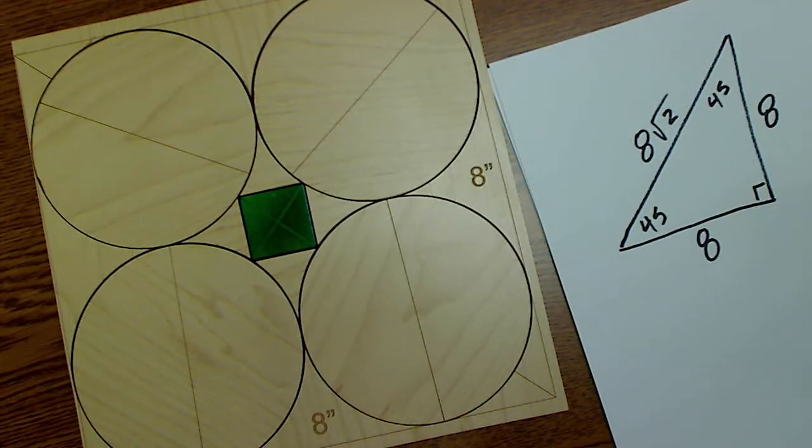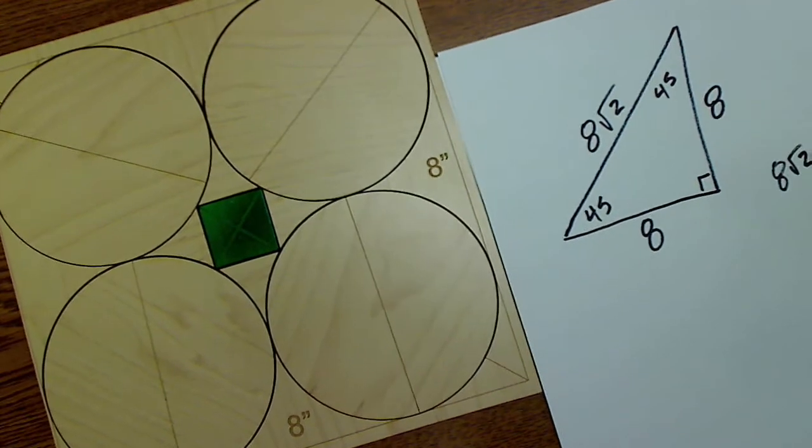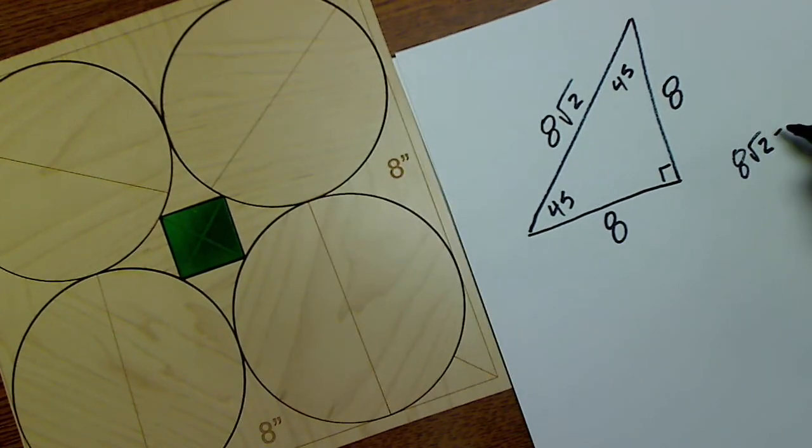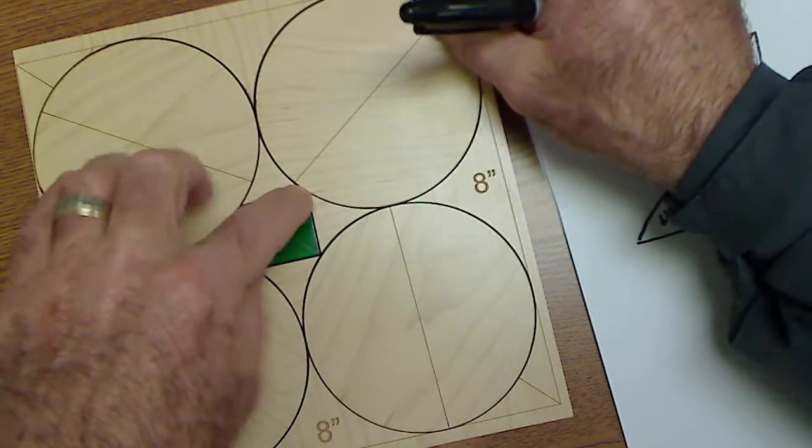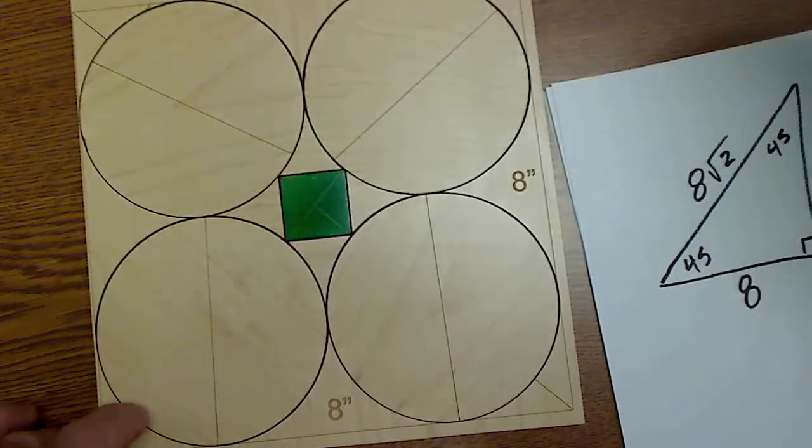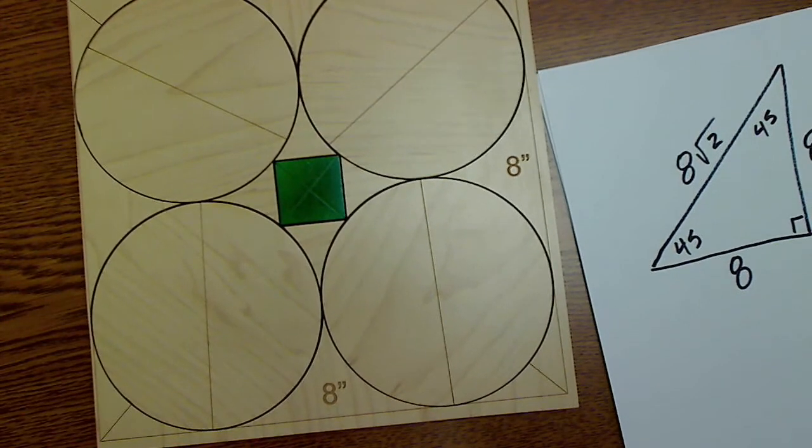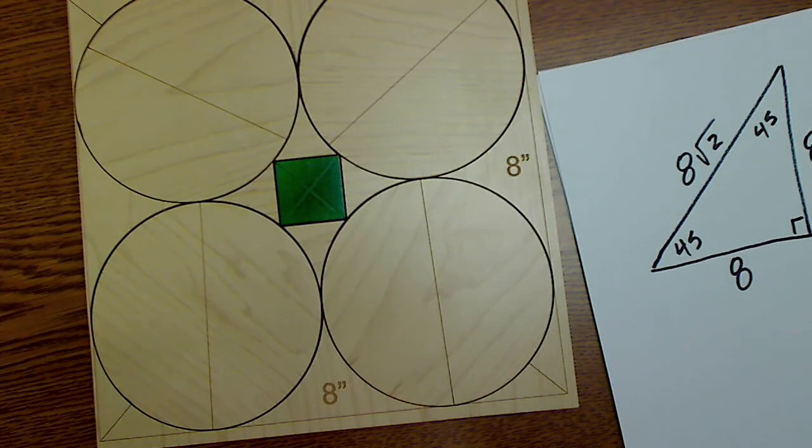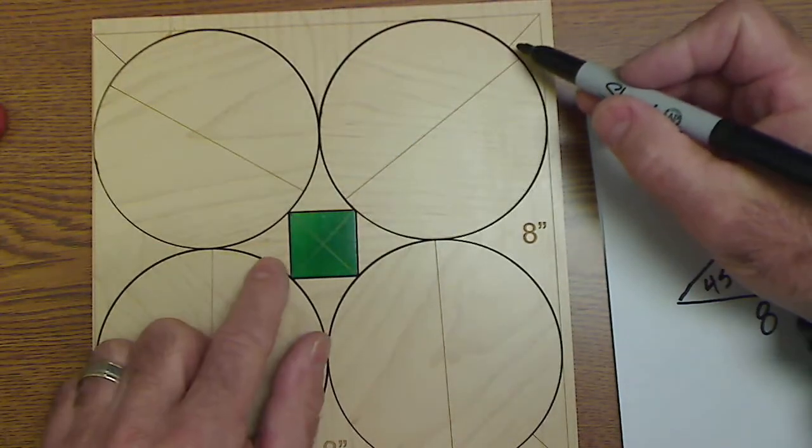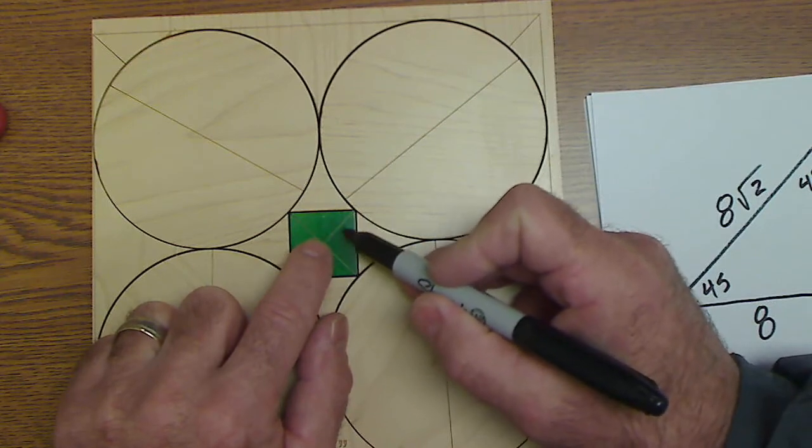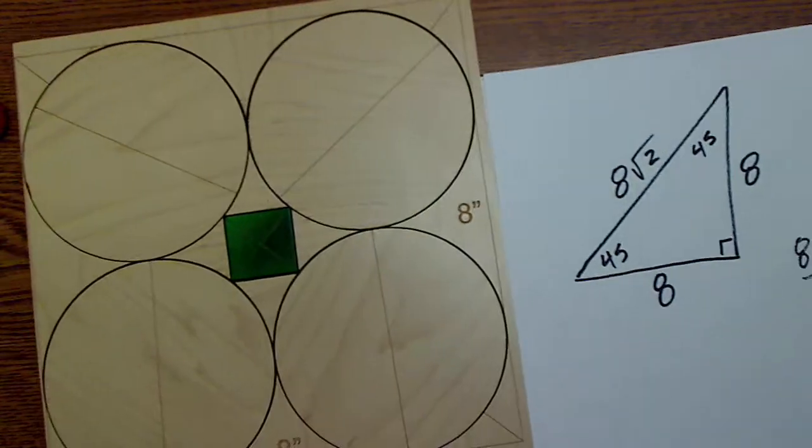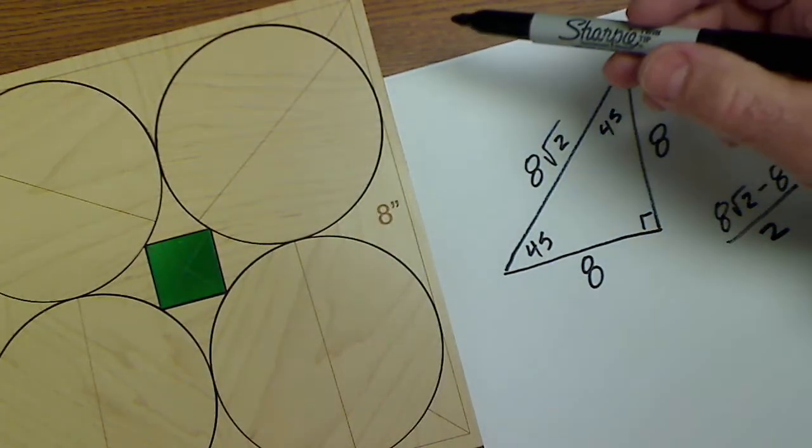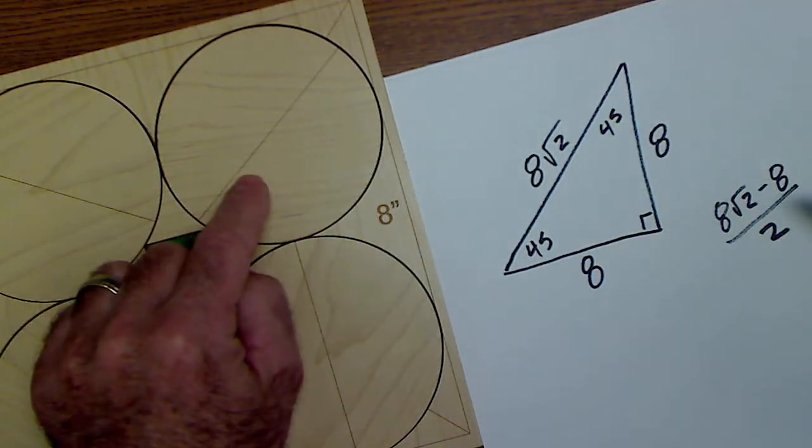All right, so I have eight root two. See, eight root two minus the diameter of this circle minus the diameter of that circle minus eight. And that's going to leave me with this distance plus this distance plus that distance right there. So I have the overall diagonal eight root two minus the diameter of the circle and the other circle minus eight.